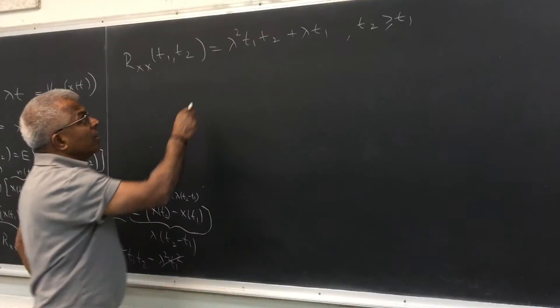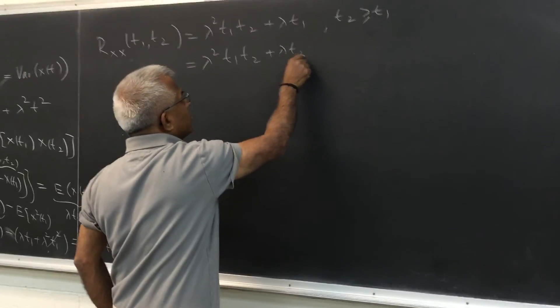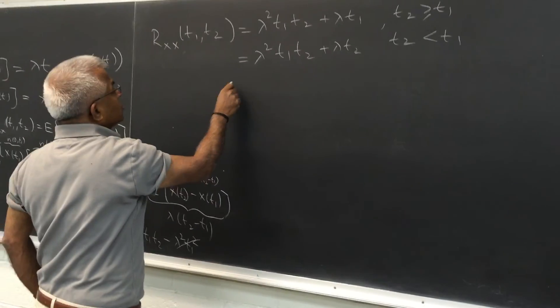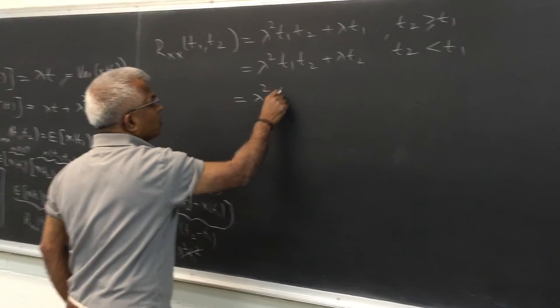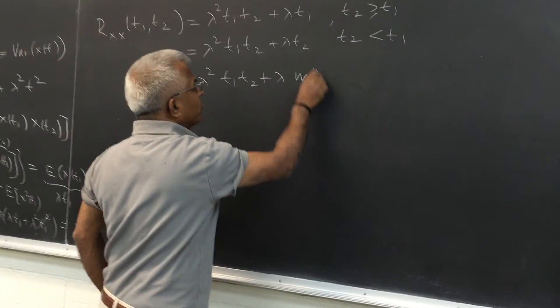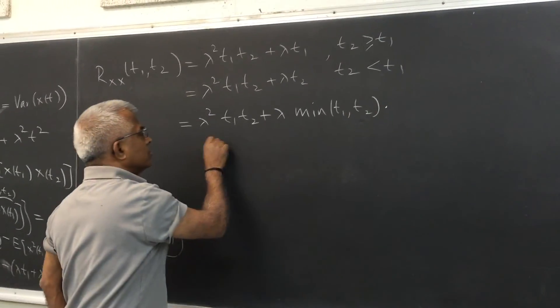And if the other way it will turn out to be lambda squared t1 t2 plus lambda t2, if t2 is less than t1. So together we could say this is lambda squared t1 t2 plus lambda min of t1, t2.